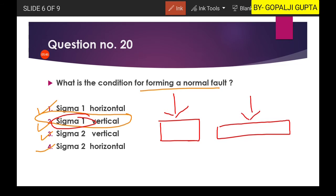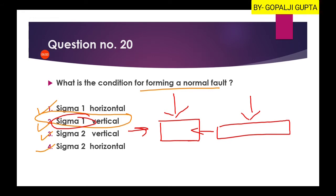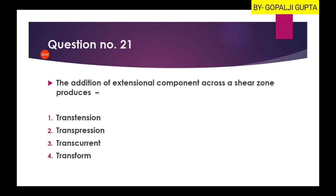While for the crustal thickening or crustal contraction, you have to do the sigma 1 horizontal, which is the condition for reverse fault. So here second option is our right answer. Now question number 21 is: the addition of extensional component across a shear zone produces?